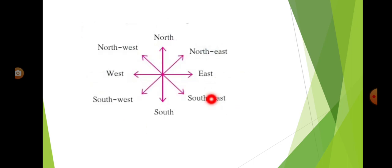Now, the sub-directions. If you see the east, west, north, and south, in between north and east, you can see this sub-direction. It is the north-east. This is the sub-direction.